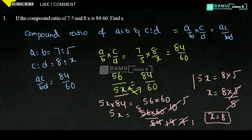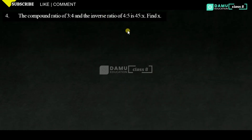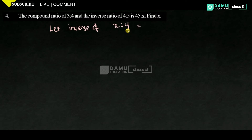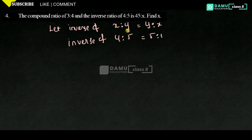That is the answer. Thanks for watching. Please subscribe. In this module we are going to discuss the fourth question: the compound ratio of 3 is to 4 and the inverse of 4 is to 5. The inverse of X is to Y equals Y is to X, so the inverse of 4 is to 5 is 5 is to 4.